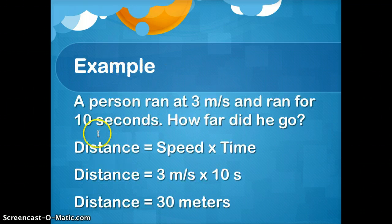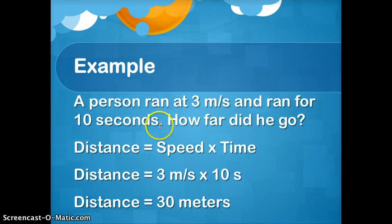So an example here. A person ran at 3 meters per second, speed, and ran for 10 seconds, time. How far did they go? We're looking for distance. Speed times time. The speed is 3 meters per second. The time is 10 seconds. The distance is 30. 3 times 10 is 30. And then, again, it's meters. The reason we know it's meters is because right here in the problem, M stands for meters. If it was MI, it would be 30 miles. If it was FT or feet, it would be 30 feet. So you need to know what's in the problem here so you know what units to use. 30 meters.